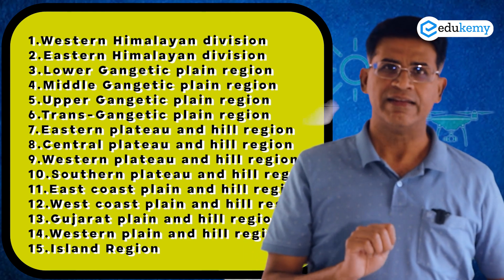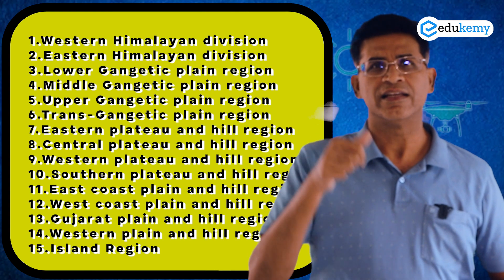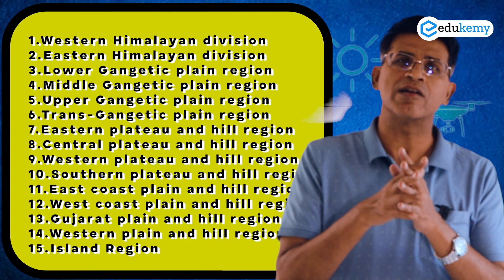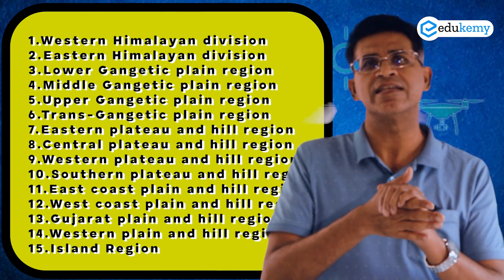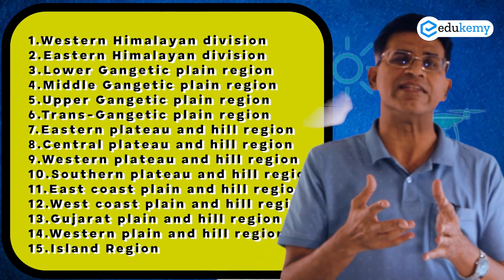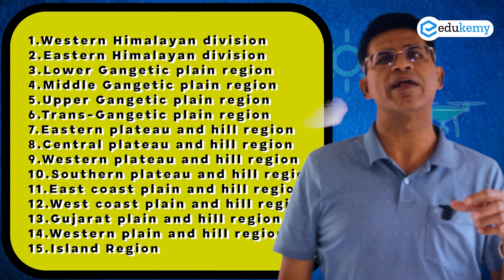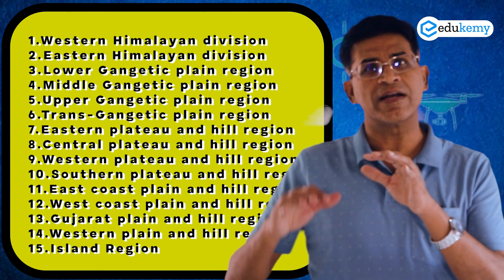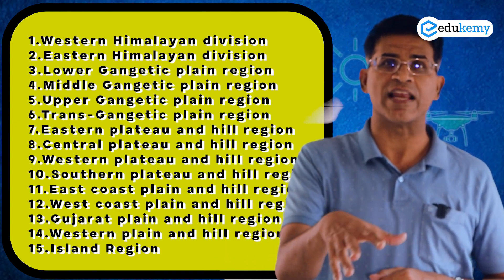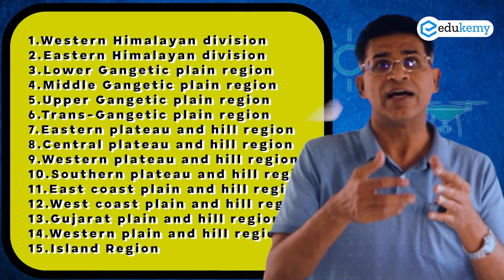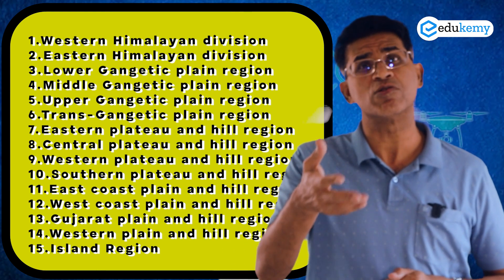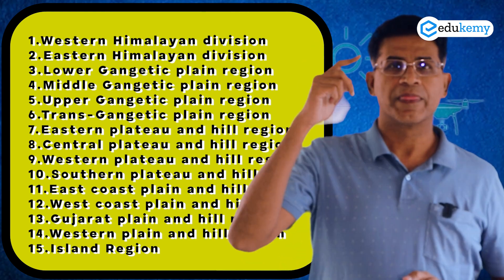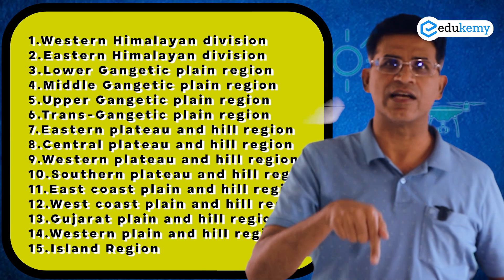Then the plateau has four parts: Central Hills, Eastern Hills, Western Hills, and Southern Hills. Central Hills includes parts of Bundelkhand, parts of the Aravalis, and parts of the Malwa region. The Eastern part includes the Chhattisgarh Plateau, Bastar Highlands, parts of Baghelkhand, and parts of Odisha. The Southern part includes parts of Telangana and parts of Tamil Nadu Hills. The Western part includes largely Maharashtra. So the plateau has four parts: Central, East, West, and South.